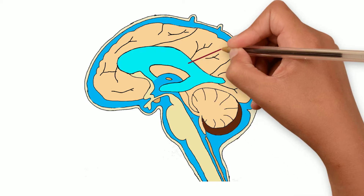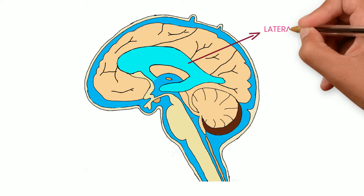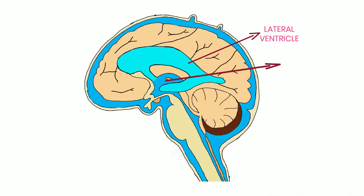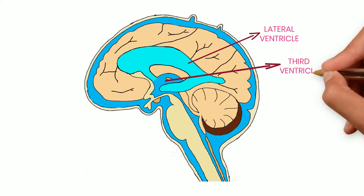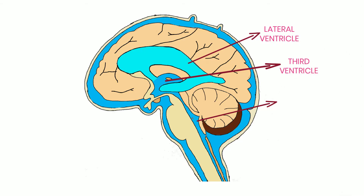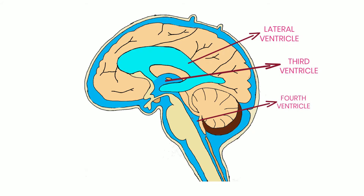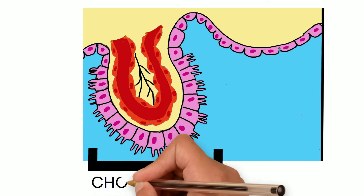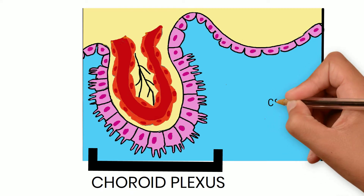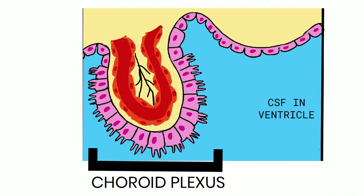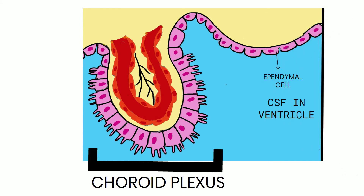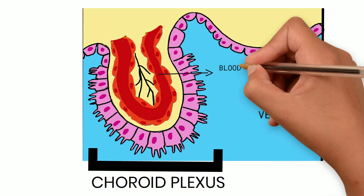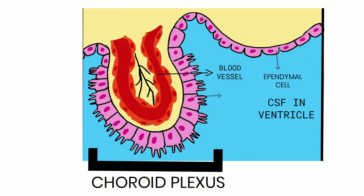In this sagittal section of the brain, we can see the lateral ventricles — two lateral ventricles, one on each side — the third ventricle, and the fourth ventricle. The choroid plexus is present in the walls of the lateral ventricles, the third ventricle, and the fourth ventricle. The choroid plexus projects into the ventricular cavity, which is filled with CSF, and is lined by ependymal cells.